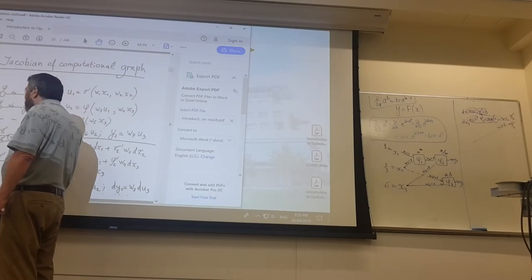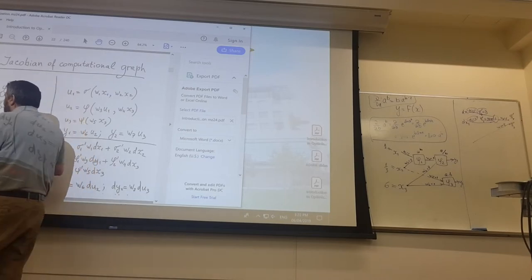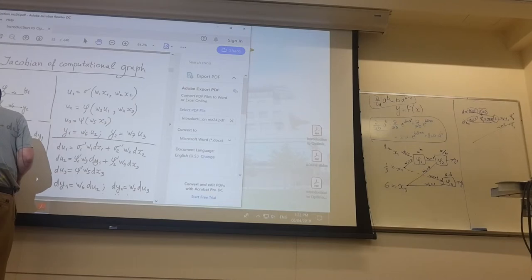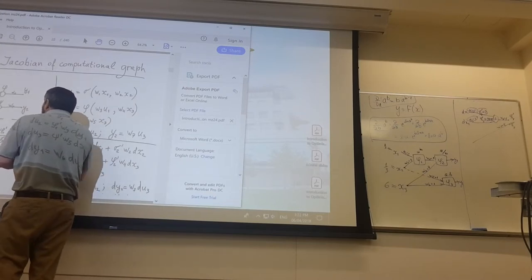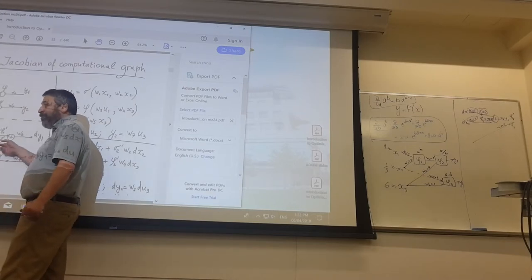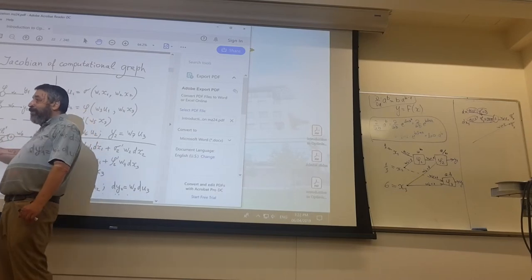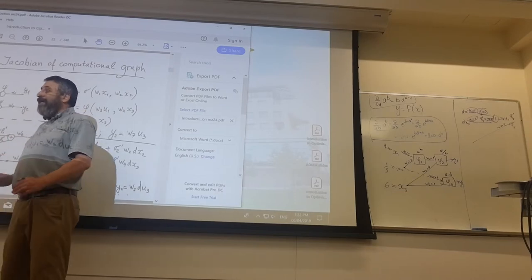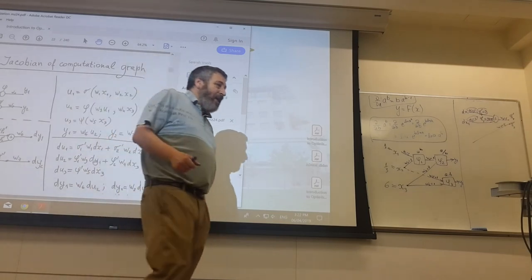Or by Jacobian. If you put here a vector, you will multiply it by Jacobian. If you will enter here the vector, you will multiply it by Jacobian transpose.